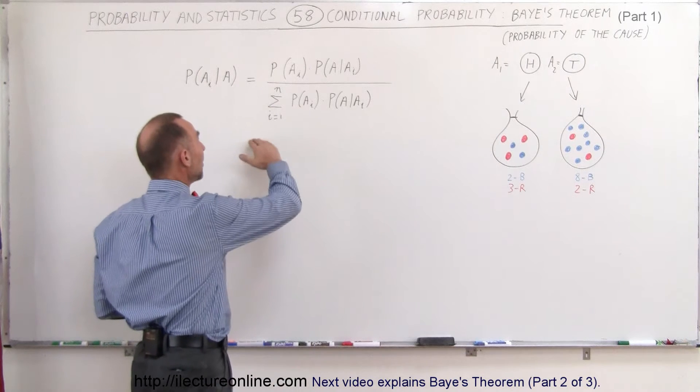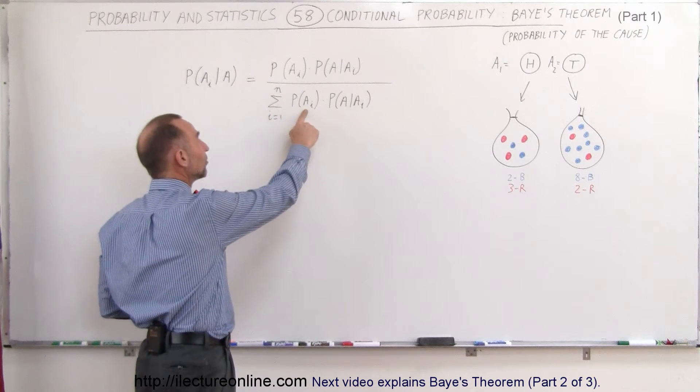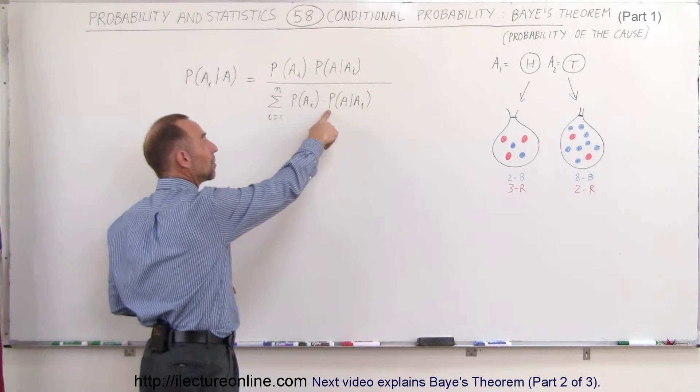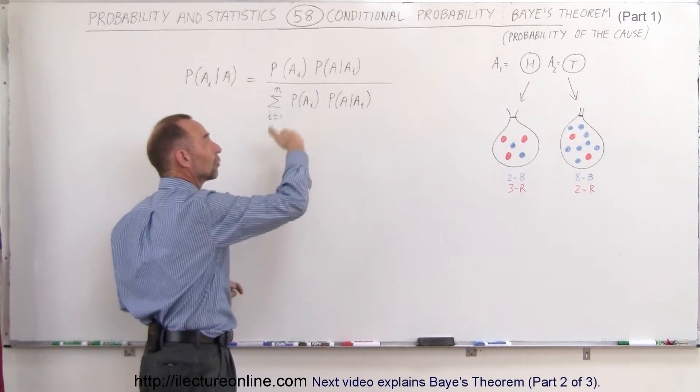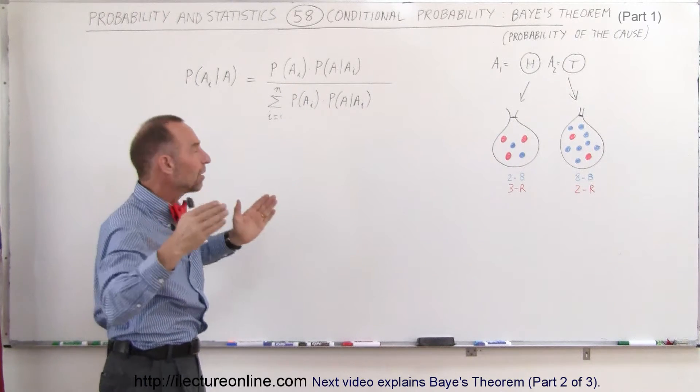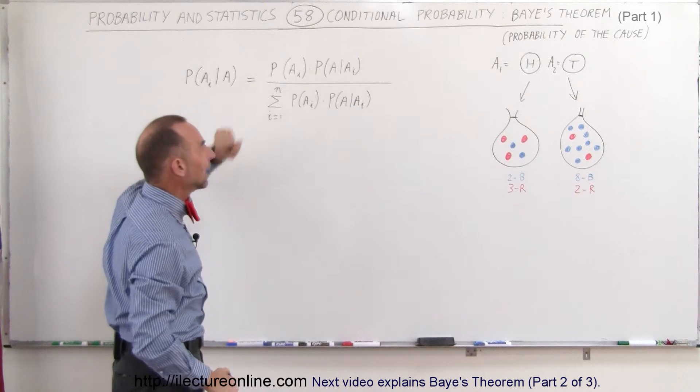divided by the sum of the probability of A sub i times the probability that A will occur, provided A sub i has occurred, and of course, A sub i will be a whole possible series of events from i to n.